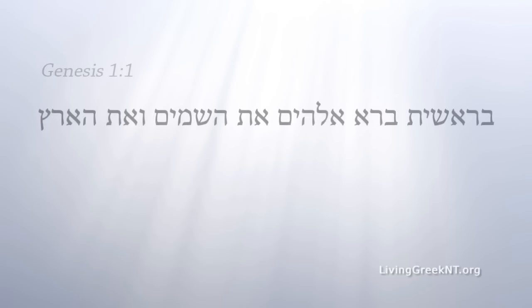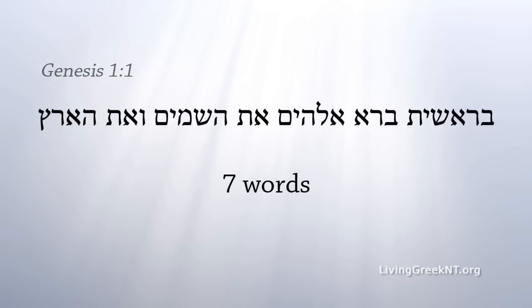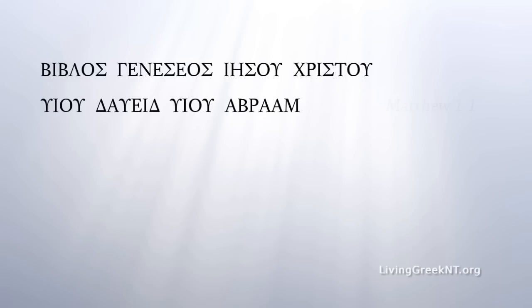In the Old Testament, the first verse, Genesis 1:1, has seven words in the original Hebrew, and Genesis 1:1 is a key to numeric structure in the Bible. In the New Testament, the first verse, Matthew 1:1, has eight words in the original Greek, and Matthew 1:1 is also a key to the numeric structure.